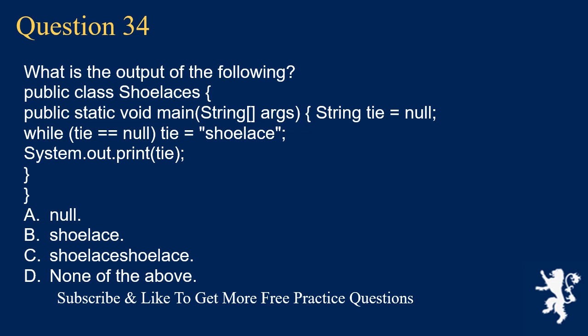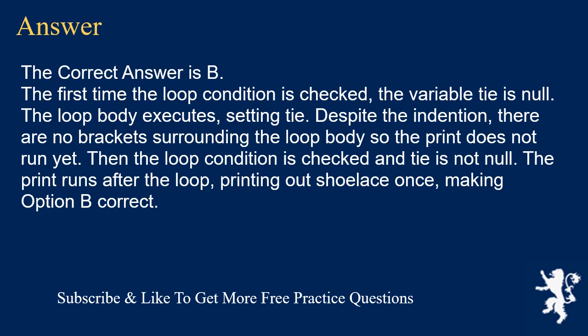Question 34. What is the output of the following? String tie = null; while (tie == null) { tie = "shoelace"; } System.out.print(tie); A. null. B. shoelace. C. shoelace shoelace. D. None of the above. The correct answer is B. The first time the loop condition is checked, tie is null. The loop body executes, setting tie. Despite the indentation, there are no brackets surrounding the loop body so the print does not run yet. Then the loop condition is checked and tie is not null. The print runs after the loop, printing shoelace once. Option B is correct.